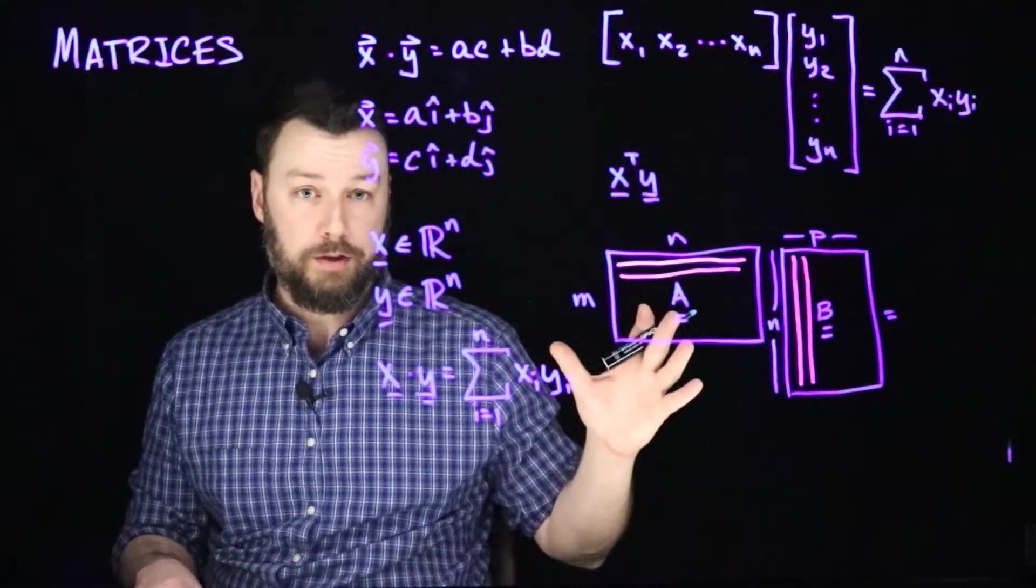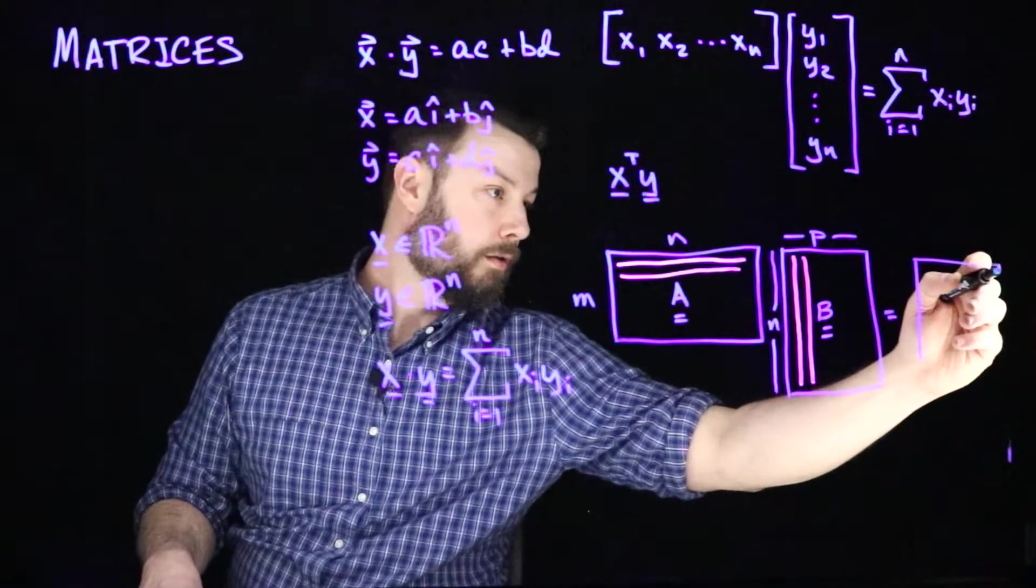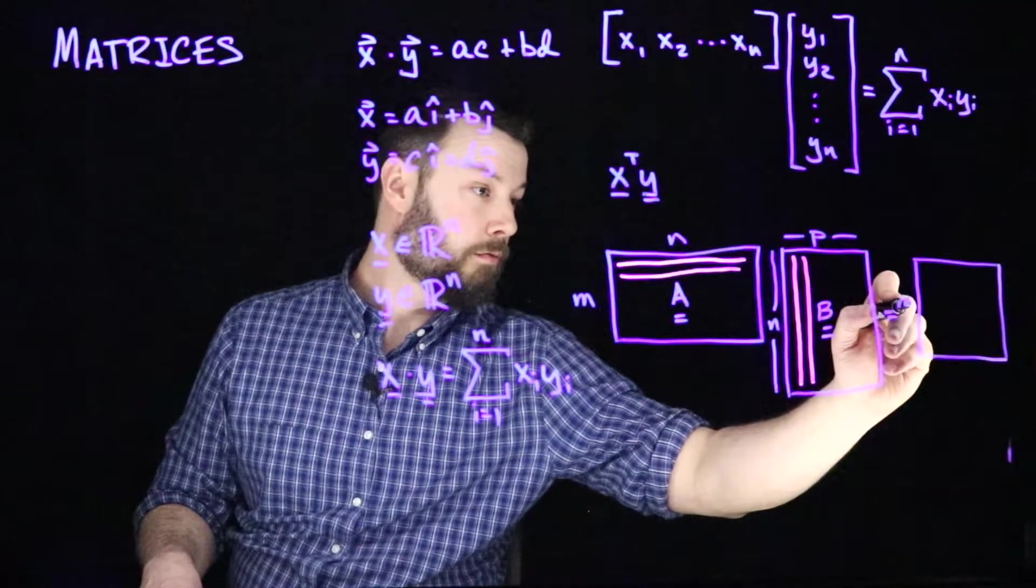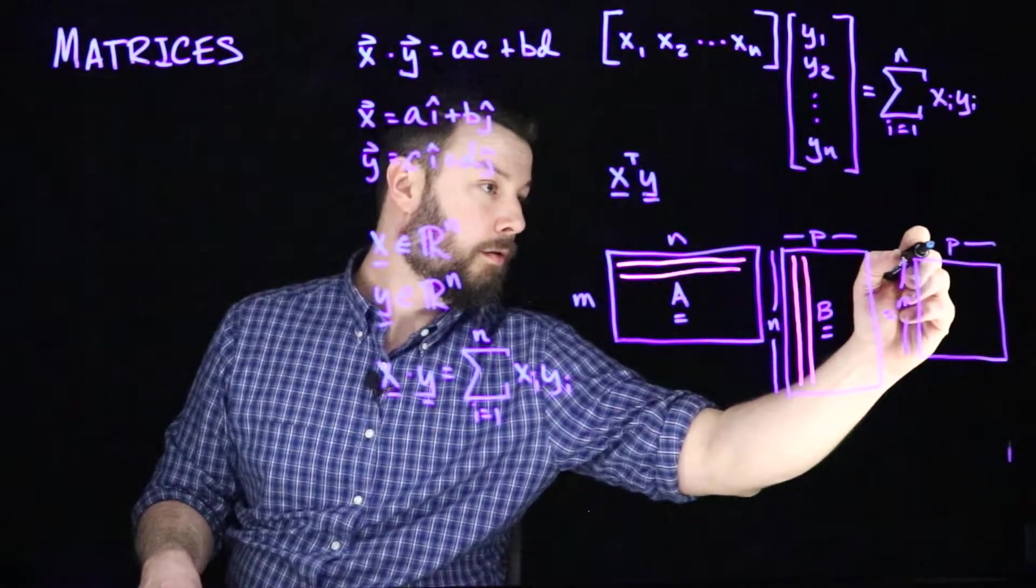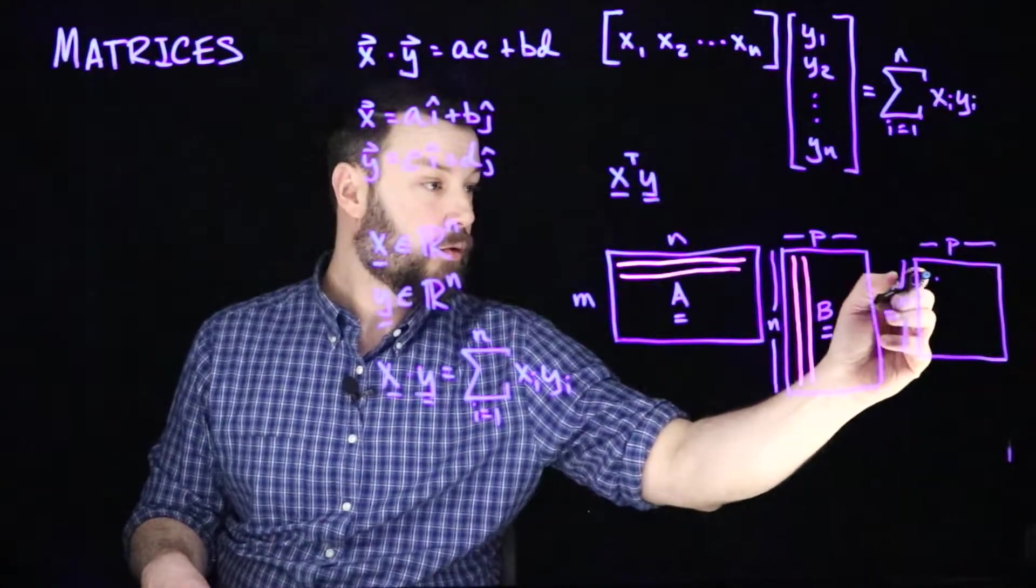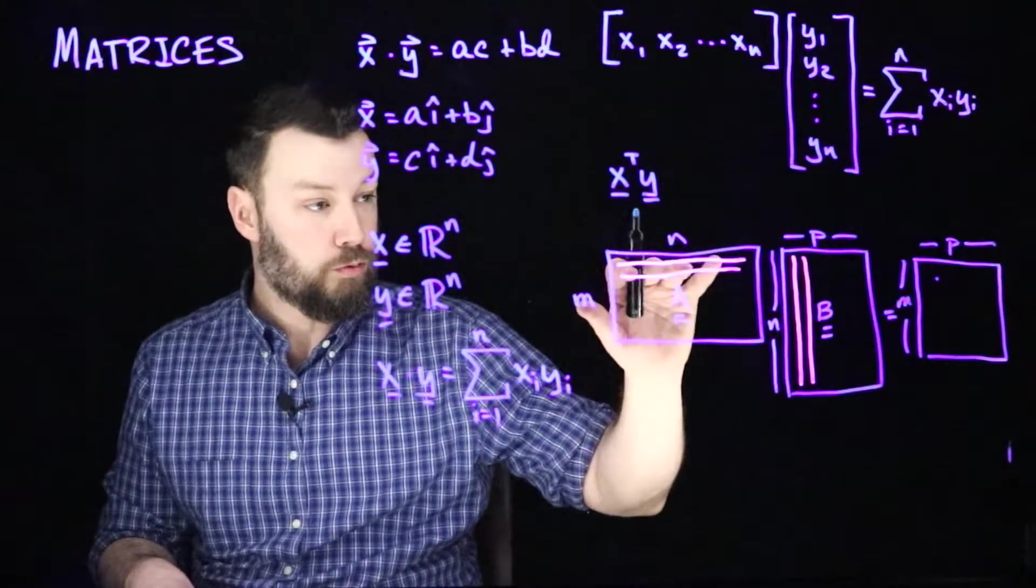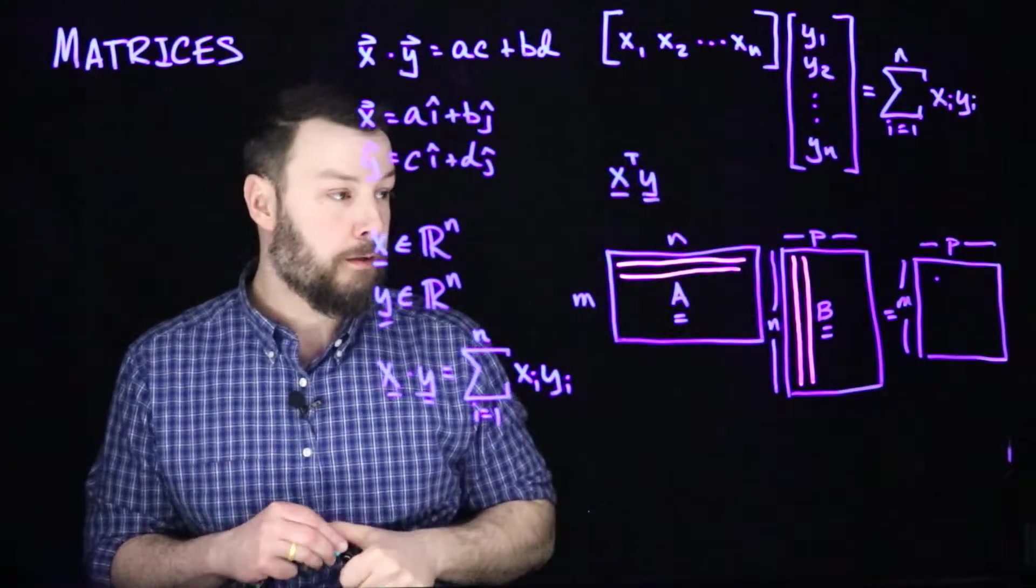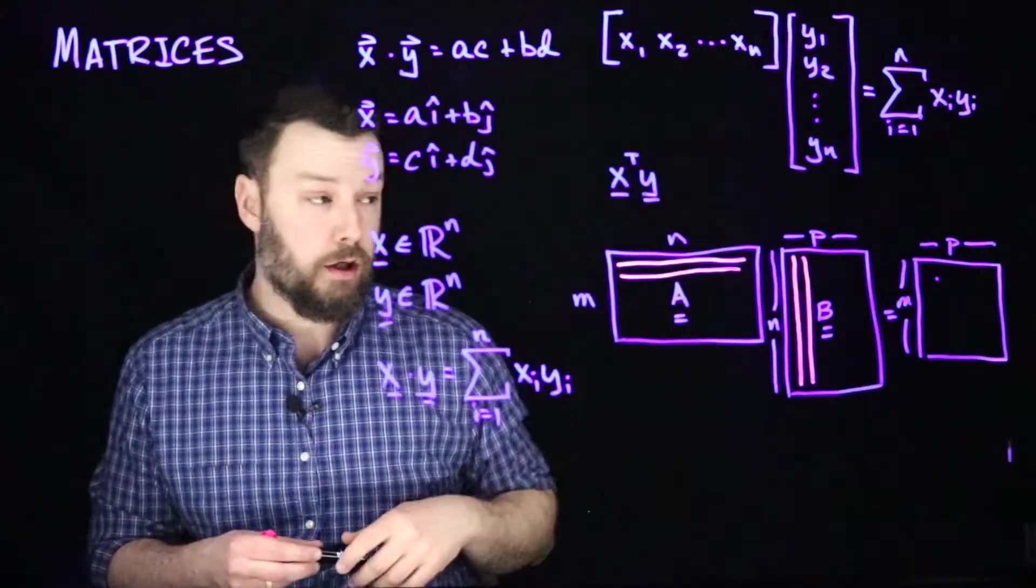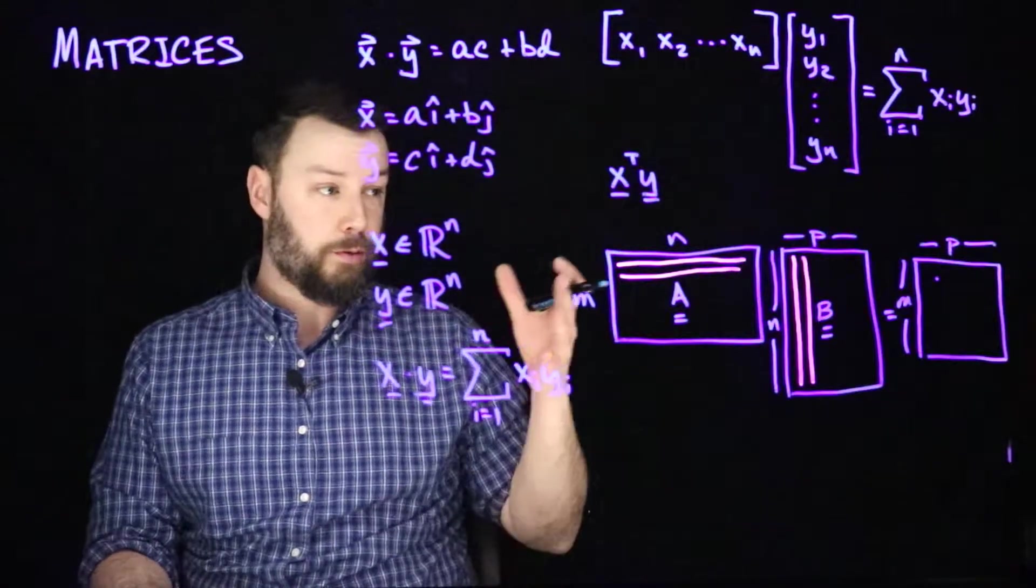And this gives us a new matrix that is now going to be M by P, where each entry corresponds to the inner product between the row vector in A and the associated column vector in B for all possible pairs of row and column vectors. This is potentially a little bit of an awkward way to think about this, so it's a case where writing out the summation convention can be a little bit more convenient.